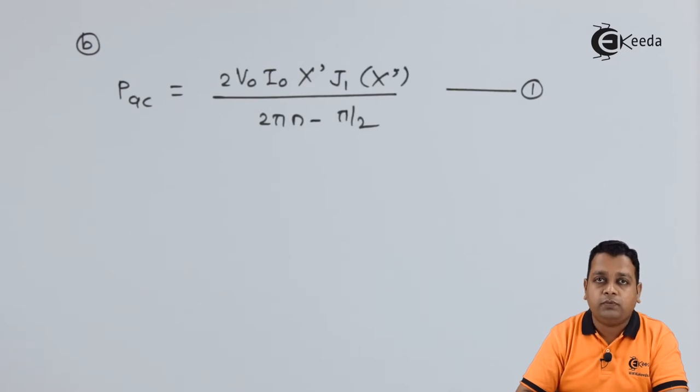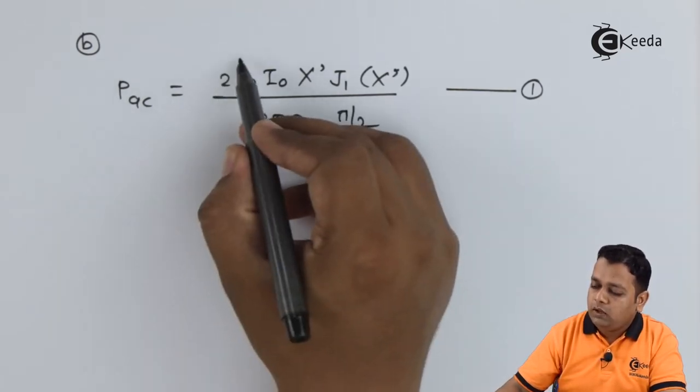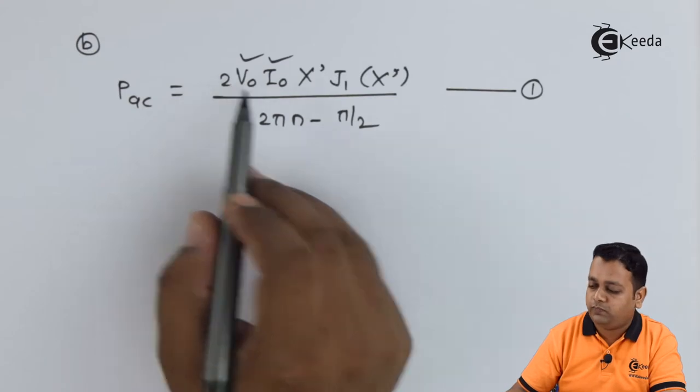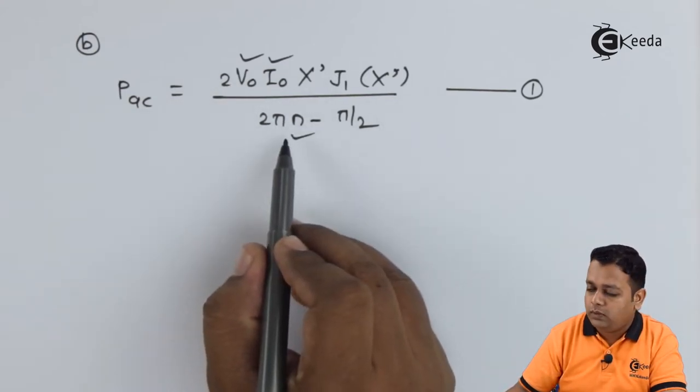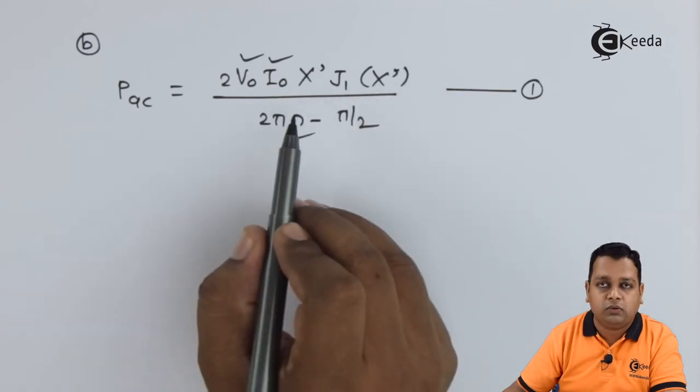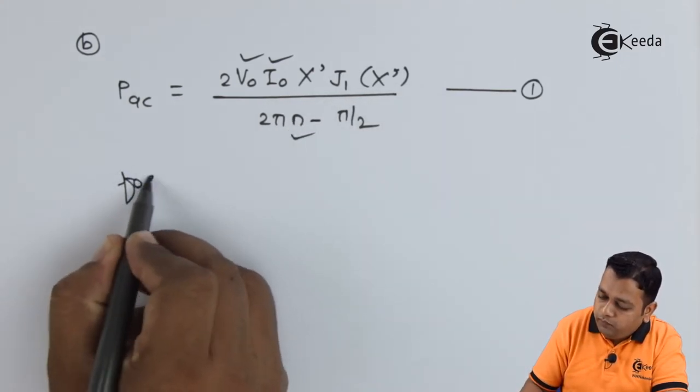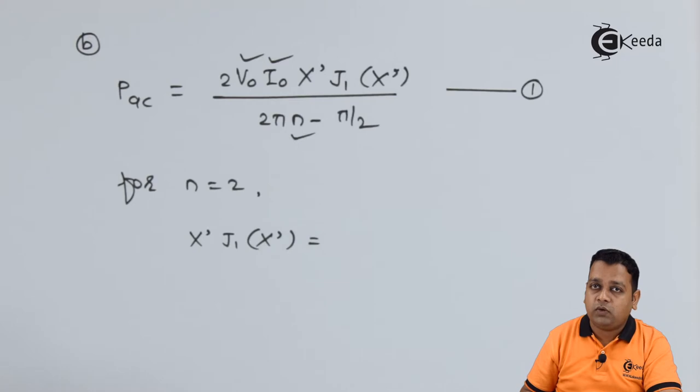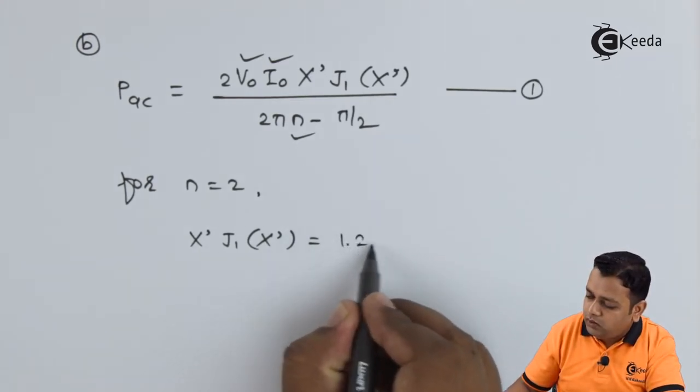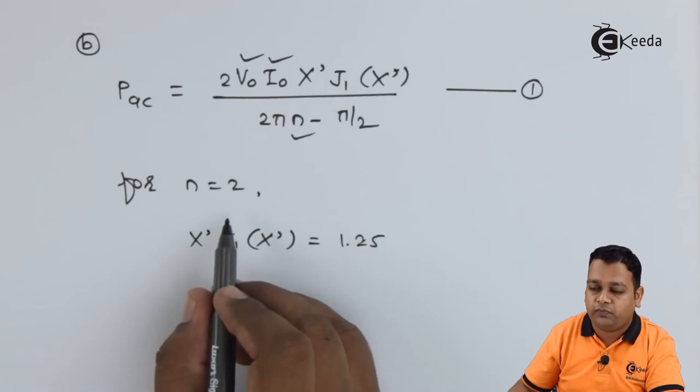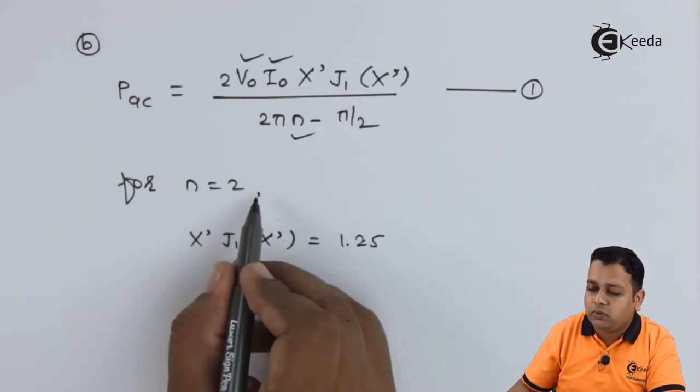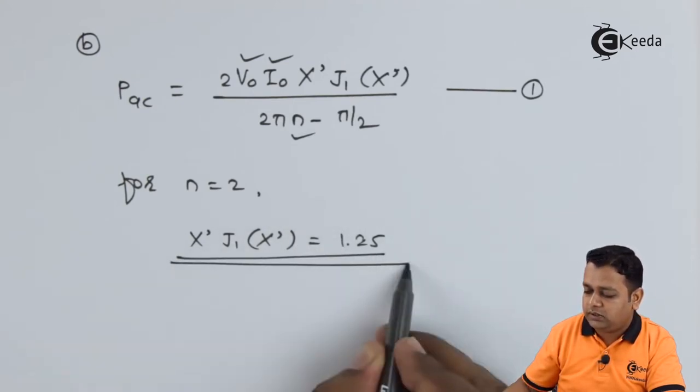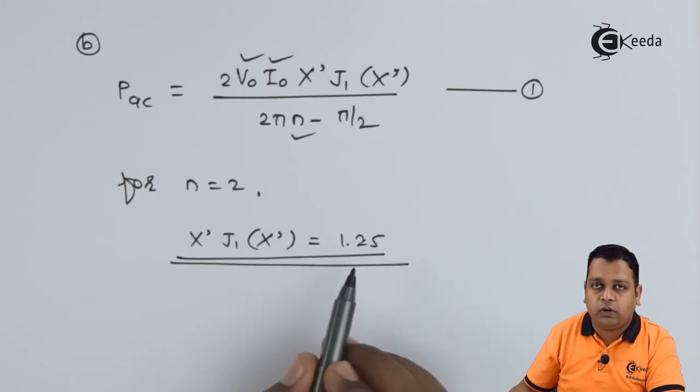Now for this equation number one if you look onto the RHS, so that time V0 I0 are available in the problem statement that we have utilized in previous portion also. n number of modes is also available. X' and J1 of X' are unknown. So therefore for n is equal to 2 provided to us. So the product of X' with J1 of X' it is equal to 1.25 for n is equal to 2. So n is equal to 2 is giving us the maximum output power for these parameters. If you see the graph you will get 1.25 for this particular product.